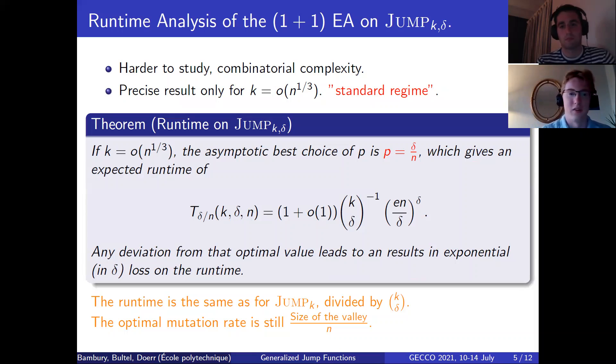So how does this generalize on our version of the benchmark, on Jump_{k,δ}? This is very hard to study very precisely, so we need to introduce a new condition on k. So we suppose that k is a little o of cubic root of n. We call this domain the standard regime. If we are in the standard regime, then we have the following result. The asymptotic best choice for p is delta over n, where delta is the size of the jump, and the expected runtime is stated as follows, and we also generalize the result that any deviation from that optimal value will lead to an exponential loss on the runtime. So observant eyes will have seen that this is essentially the same runtime as for the run on Jump_k, only divided by a binomial coefficient k choose delta, and the optimal mutation rate is the same in the sense that it is the size of the valley divided by n. So we're happy because we get this binomial speedup that we were expecting.